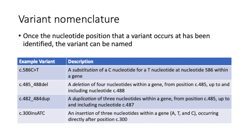Once the nucleotide position that a variant occurs at has been identified, the variant is named. This slide shows some examples of common variant types, including nucleotide substitutions, deletions, duplications, and insertions. For substitutions, one nucleotide in the sequence is substituted for another, without increasing or decreasing the total number of nucleotides. This is denoted by showing the reference nucleotide, in this case a C, at position C dot 349, followed by the variant nucleotide, in this case a T. For deletions and duplications, the variant nomenclature indicates the size by showing the first and last nucleotide of the region that was deleted or duplicated. For insertions, the nucleotides that have been inserted are listed, in addition to the nucleotide position in the gene that occurs directly upstream of where the insertion occurs.